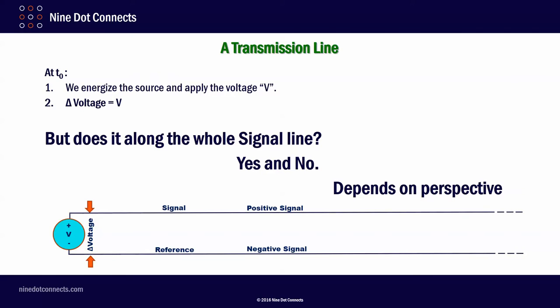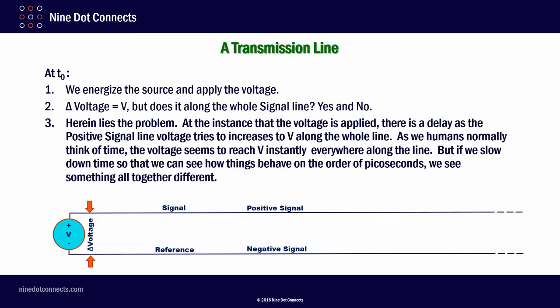Now, at time zero, we're going to energize the source and apply the voltage V. Now, the question that I want to ask everybody is when V gets turned on, do you feel V all the way down the transmission line along the whole length? Some of you may say yes, some of you may say no. It depends on the perspective. Herein lies the problem. At the instance that the voltage is applied, there is a delay as the positive signal line voltage tries to increase to V along the whole line. As we humans normally think of time, the voltage seems to reach V instantly, everywhere along the line. But if we slow down time so that we can see how things behave on the order of picoseconds, we see something altogether different.